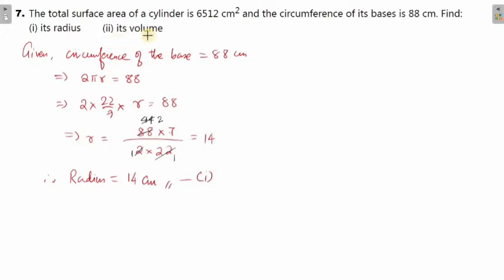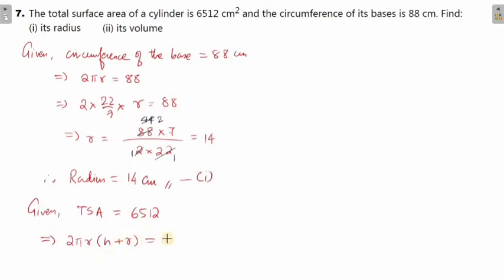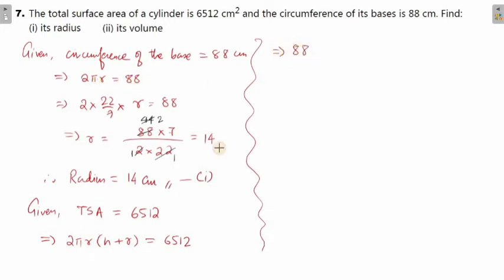Next, they are asking us to find the volume, but we also need to use the total surface area. So given: total surface area is 6512. The formula for total surface area is 2πr(h + r), and this equals 6512. Now, 2πr is 88, so in place of 2πr I am writing 88 into (h + r).